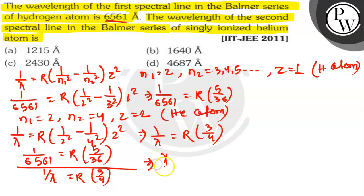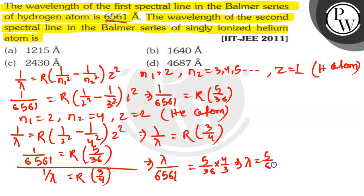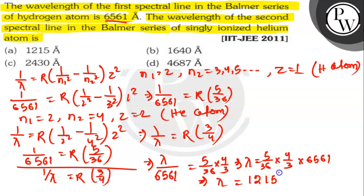On solving, we get lambda by 6561 is equal to 5 by 36 into 4 by 3. So the value of lambda is 1215 Angstrom. The wavelength of the second spectral line of the Balmer series for singly ionized helium will be 1215 Angstrom, that is option number A. Thank you.